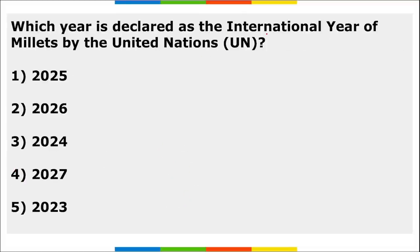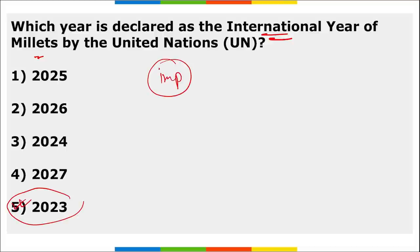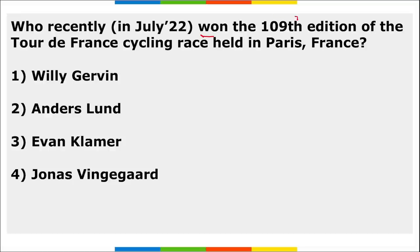Next: which year has been declared as the International Year of Millets by the United Nations? It is the year 2023 that has been declared as the International Year of Millets by the UN. Many programs have been planned by the central government at local, state, national, and international levels.